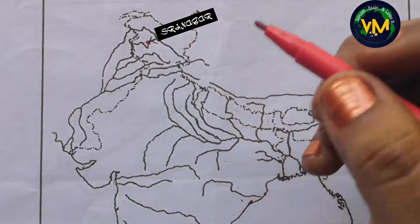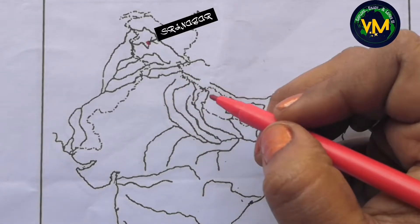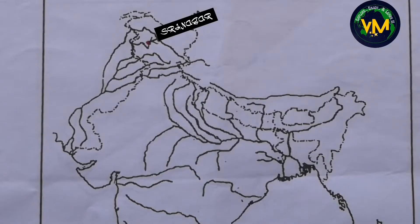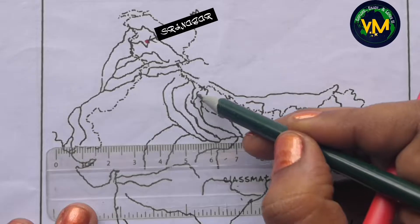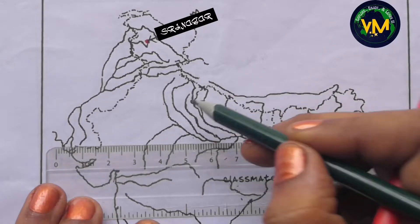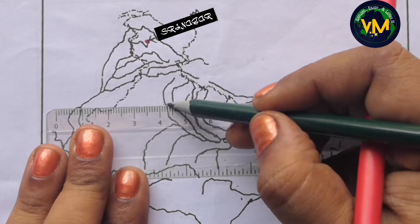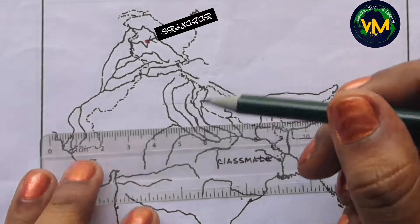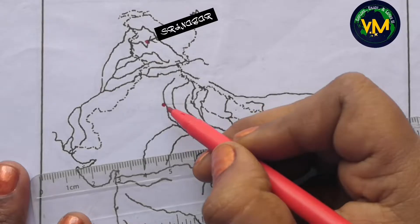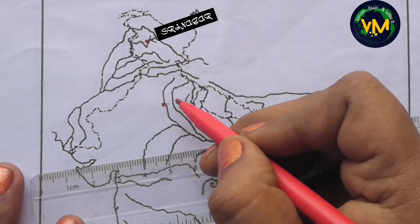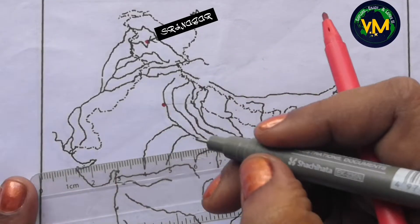Next we have Delhi, the capital city. This is River Yamuna — take a scale. You see this is the Indian boundary between India and Nepal. From here, keep a scale and where it cuts River Yamuna exactly, mark it to the left side of River Yamuna. Do not put it inside the river or to the right side. Mark it to the left side. This is Delhi.